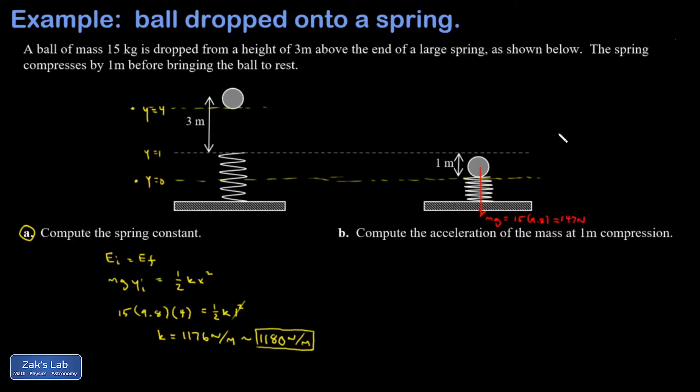And then I have the spring pushing up. That spring force is given by Hooke's law. I normally just talk about Hooke's law in terms of the magnitude, and then I'll indicate the direction in the diagram. So definitely pushing up with a magnitude of Kx. Now that I have my spring constant, I'll just throw it in. I'm going to use the more precise version: 1176, 1 meter compression, so I have 1176 newtons pushing up.